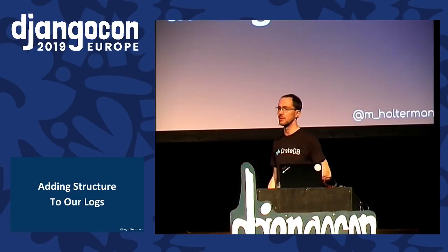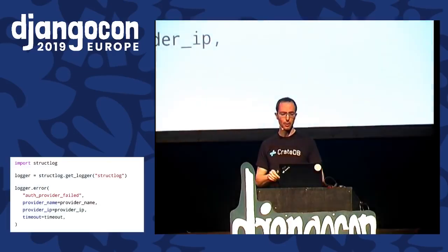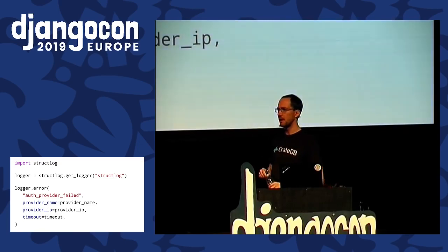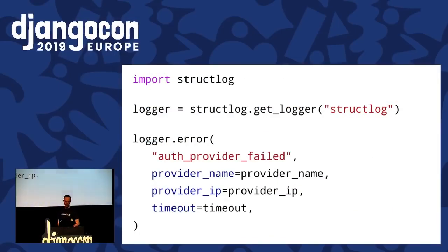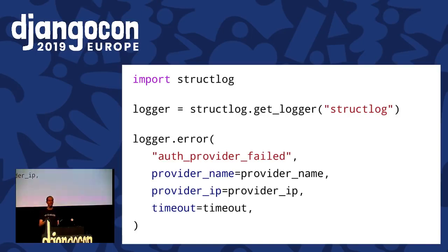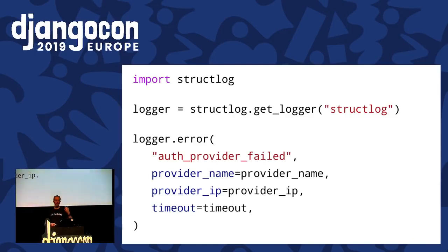Instead, I think we should look into something more structured. We should add structure to the log messages we have these days. For example, instead of using Python's logging library, we use a library called structlog — structured logging. We create a logger similar to before, but instead of having this long text, we have an event. This event is a short string that provides the very specific meaning of what's happening. Then you attach annotations or additional attributes to this event — all the information you have at that point that could remotely be helpful.